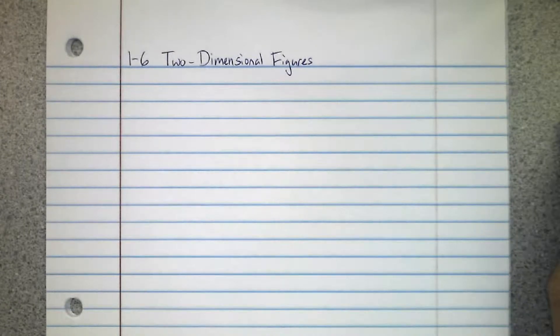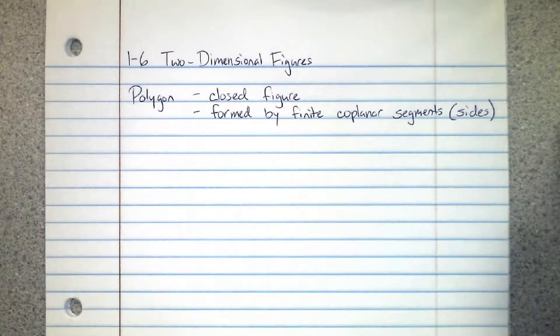Alright, this is Chapter 1, Section 6: Two-Dimensional Figures. In this section we're going to talk about polygons. Polygons are closed figures formed by finite, coplanar segments on the same plane.